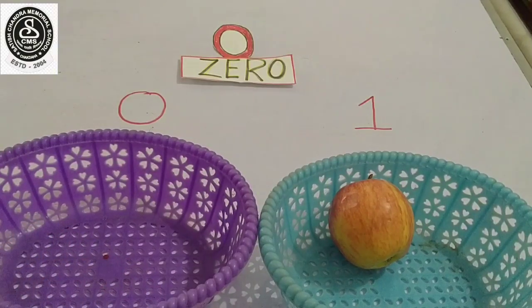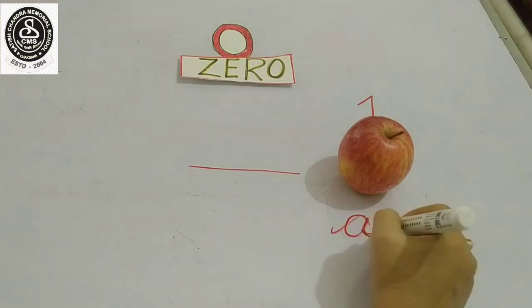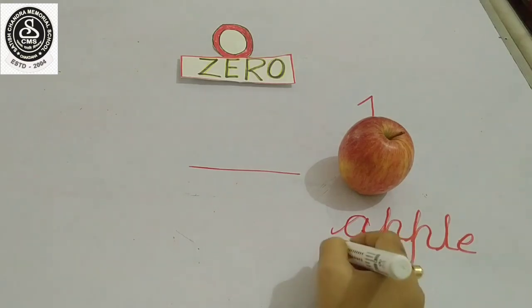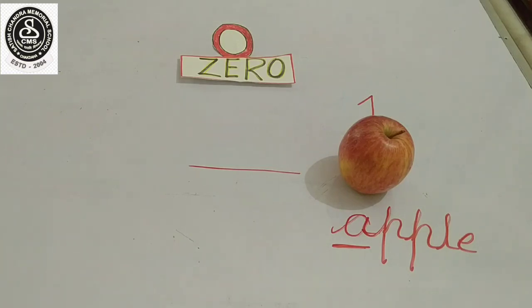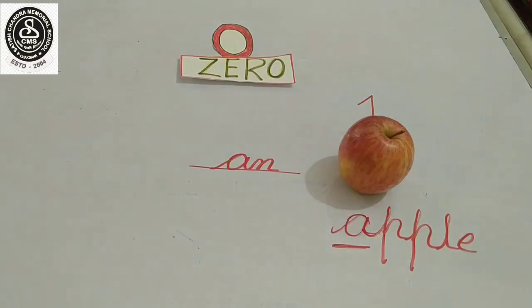From here you can learn English also. Already you have learned vowel and consonant. So here one apple is there. Can you tell me, before apple what should I write? A apple or an apple? What is the spelling of apple? A-P-P-L-E. So is A a vowel or consonant? Yes, you are right. A is a vowel. So before vowel we should write an. So an apple.